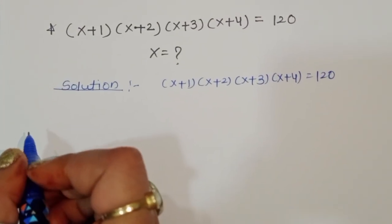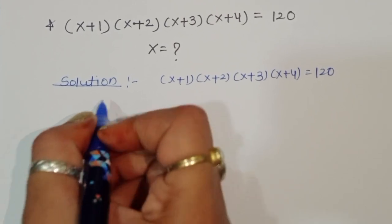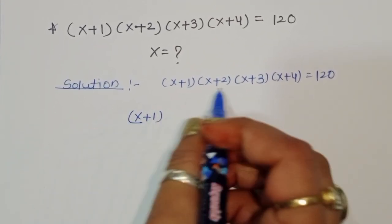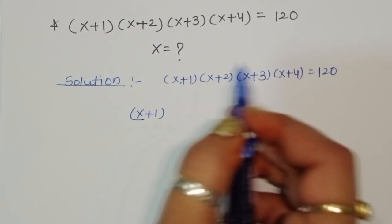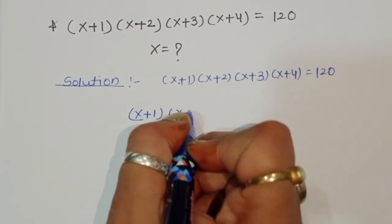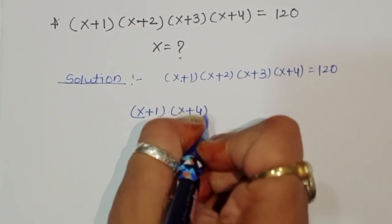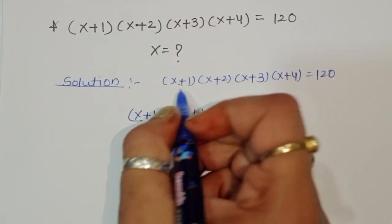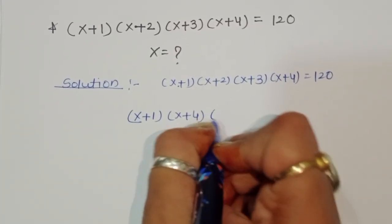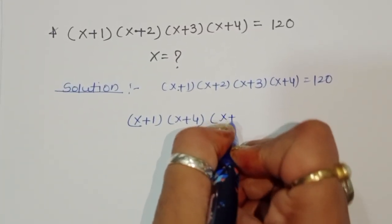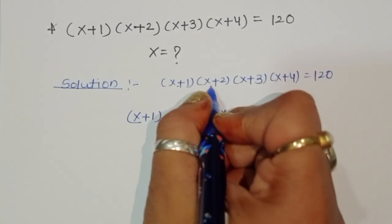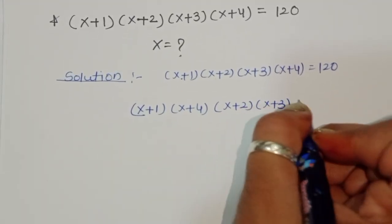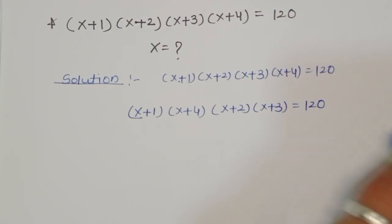Now we can rearrange the terms: (x+1)(x+4) times (x+2)(x+3) is equal to 120.